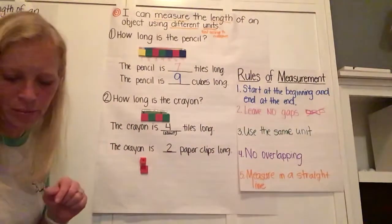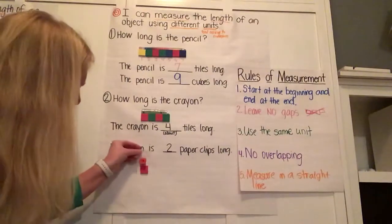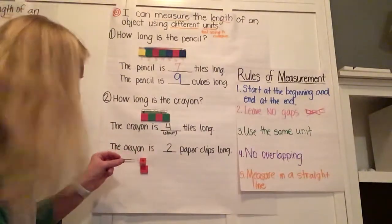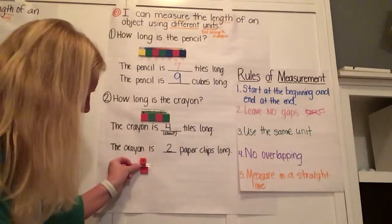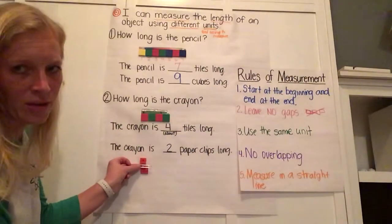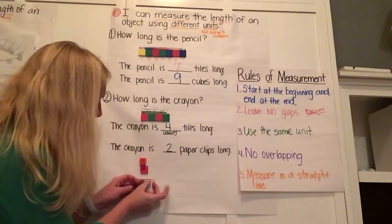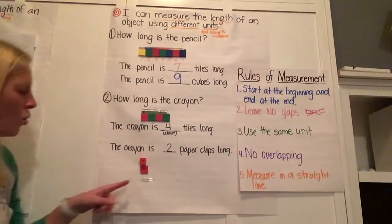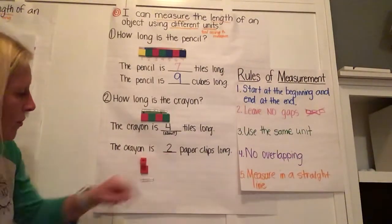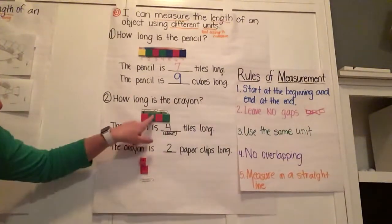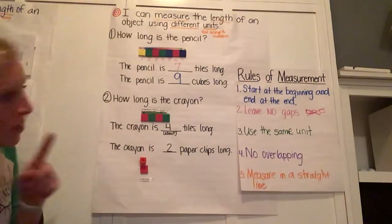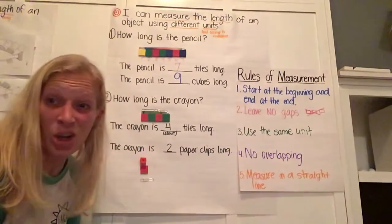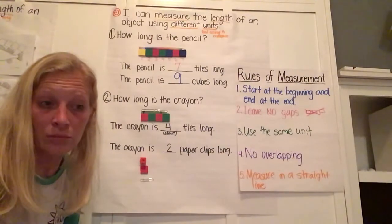Now, what about this paper clip? Where should that go? Should it go up here? Is it smaller than the cube, or bigger than the cube? Bigger than the cube. Is it smaller than the one-inch tile, or longer than the one-inch tile? Longer than the one-inch tile. Look how long that baby goes. Holy guacamole. But, we need a very few of these, only two. We need four of these to measure that same thing. And if we used our cubes, what do you think would happen? Would we need more cubes, or less cubes?